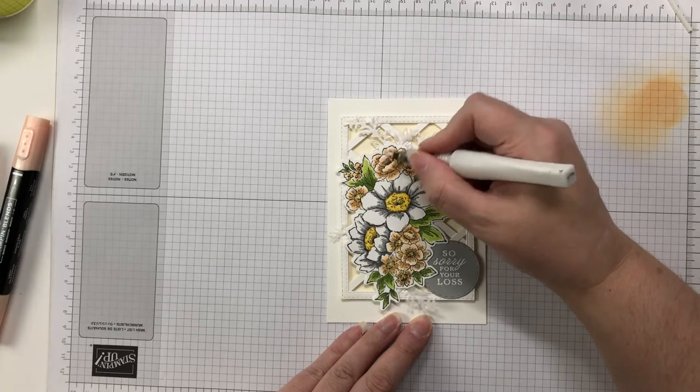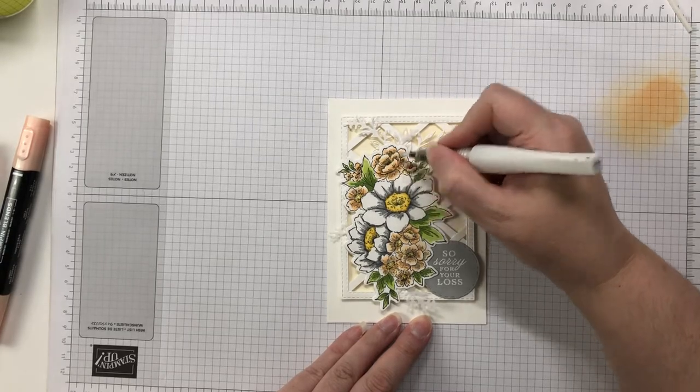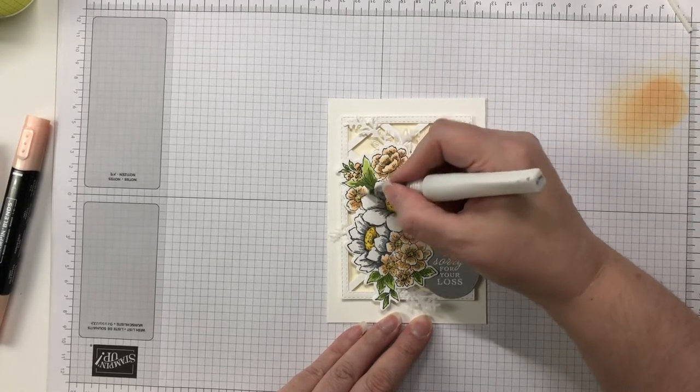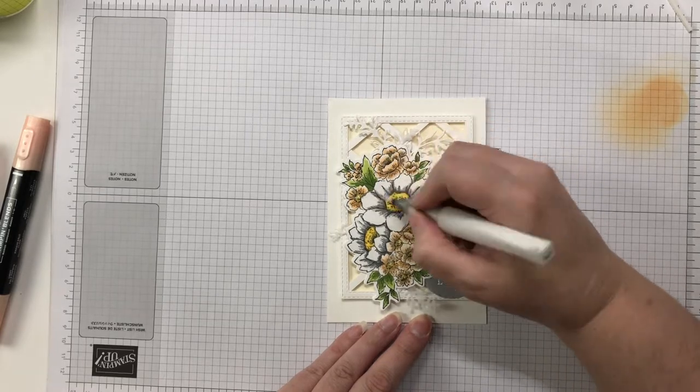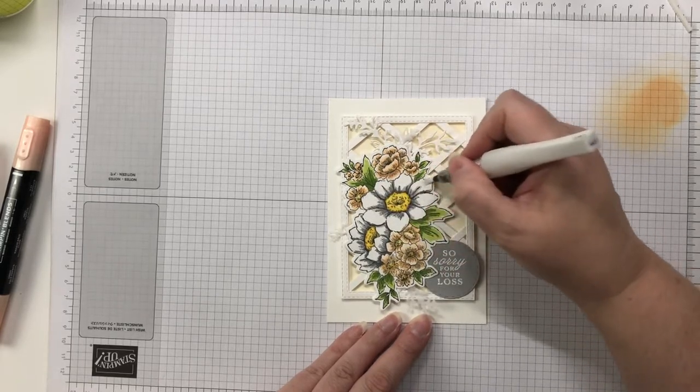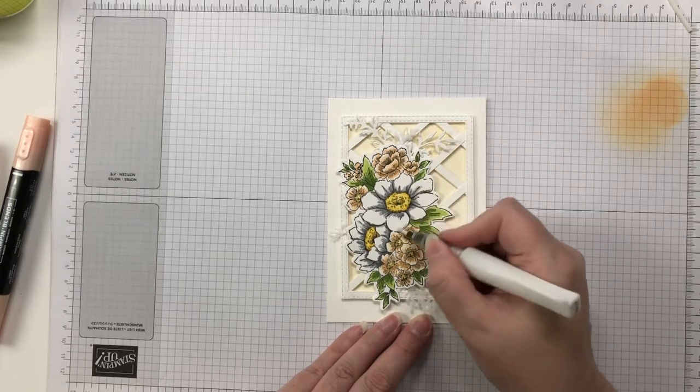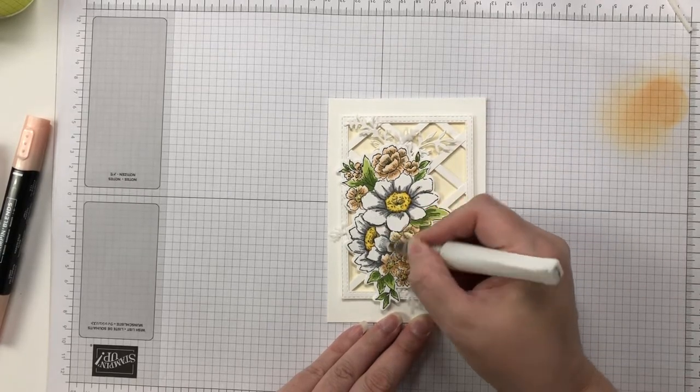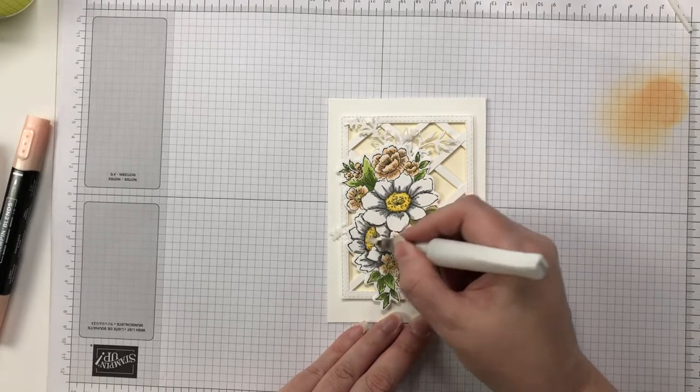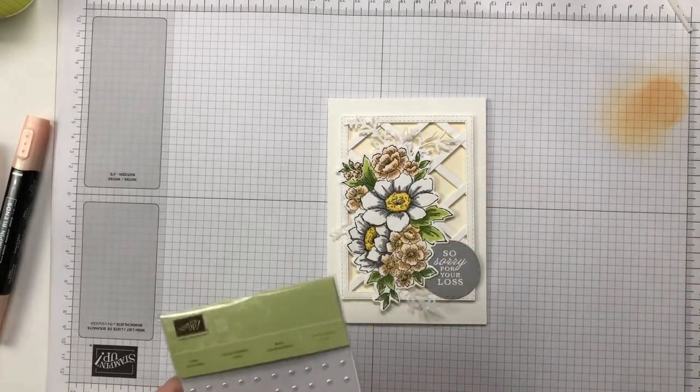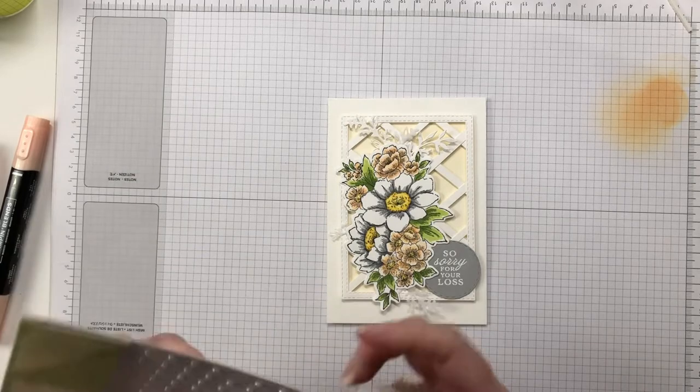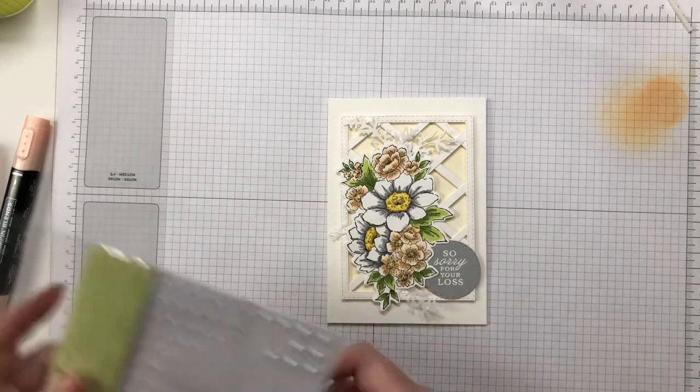Of course I tend to use Wink of Stella on all of my floral elements. In fact usually most cards have it, let's be honest. And I like the fact that it just gives that soft shimmer. It's not a real glittery effect, it just sort of catches the eye without being too obvious. And I tend to only put it onto my petals and flowers rather than leaves.